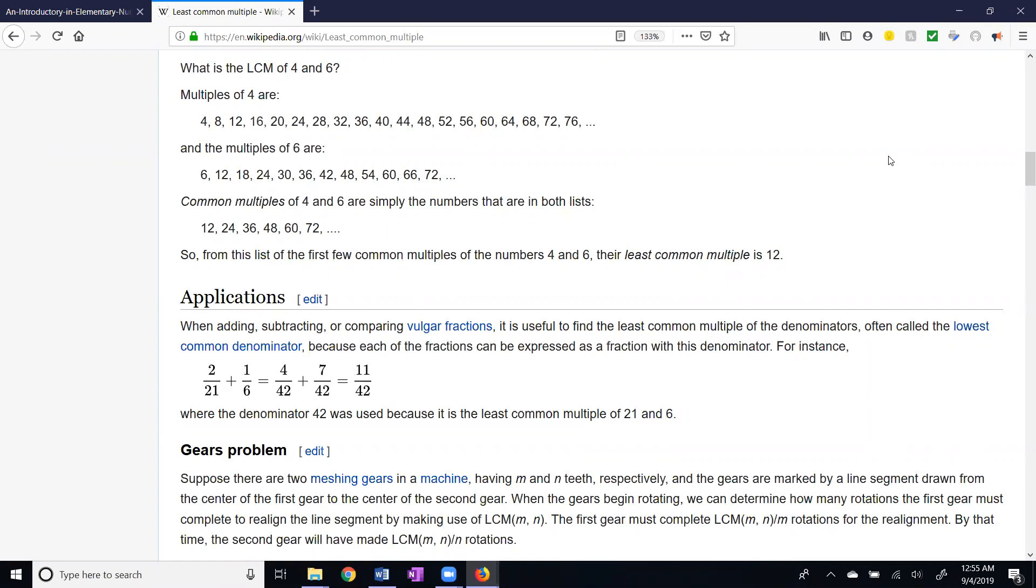So if we want the least common multiple of four and six, we just list the multiples of four: four times one, four times two, four times three, and so on. And the multiples of six: six times one, six times two, six times three, and so on.